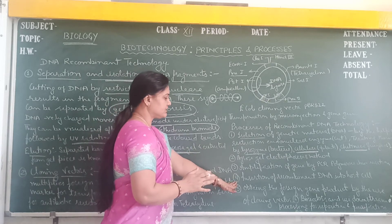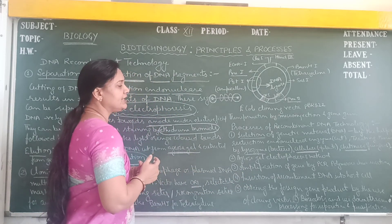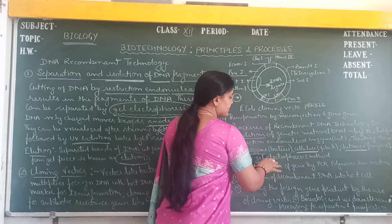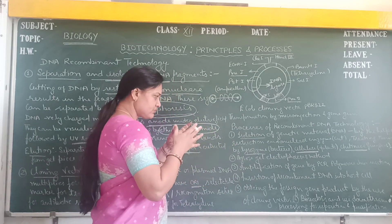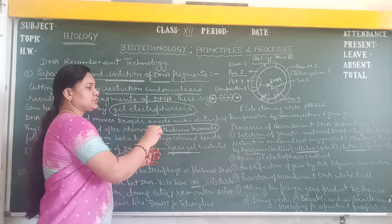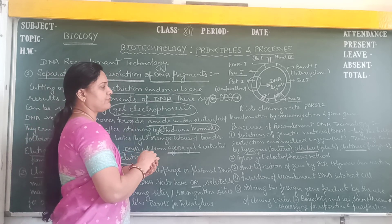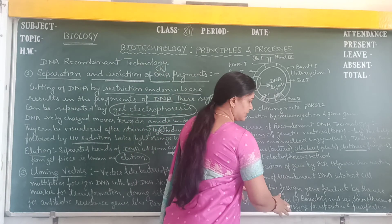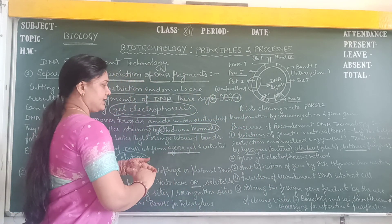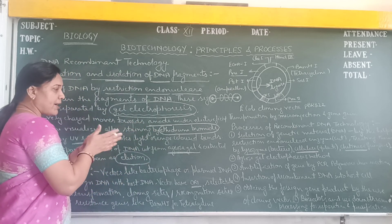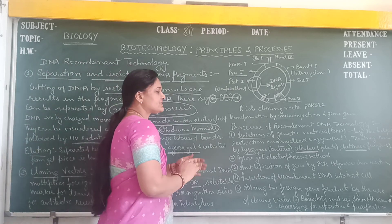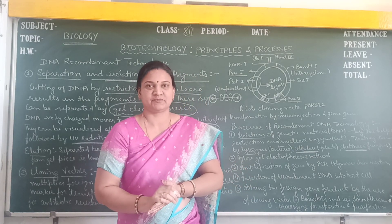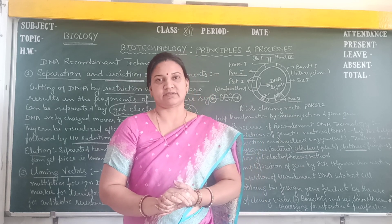After amplification, the fourth is the insertion of recombinant DNA into the host cell. We insert the recombinant DNA, the foreign DNA, into the host cell with the help of micro-injection or the gene gun. And the fifth step is obtaining the foreign gene product by the use of cloning vector and by use of bioreactors and downstream processing for separation and purification of these extracted DNAs. It is all about the recombinant DNA technology. Thank you.